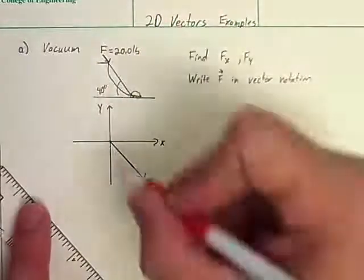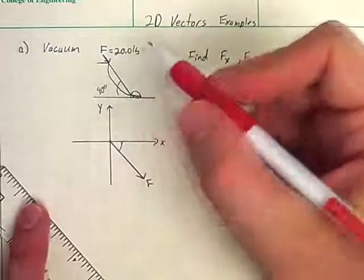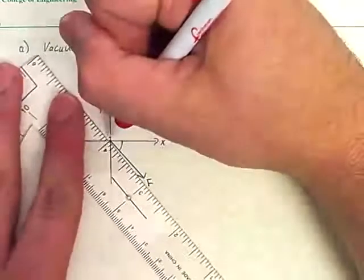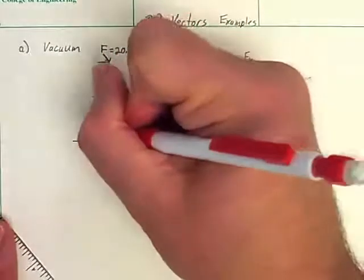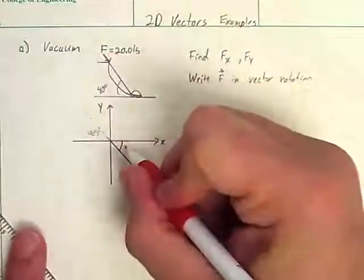This is going to be F. And this angle, if you want to double check against it, remember geometry. If this is 40 degrees, this angle is also 40 degrees.